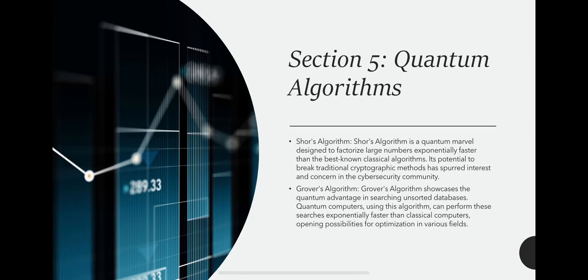Section 5: Quantum Algorithms. Shor's Algorithm is a quantum marvel designed to factorize large numbers exponentially faster than the best-known classical algorithms. Its potential to break traditional cryptographic methods has spurred interest and concern in the cybersecurity community.